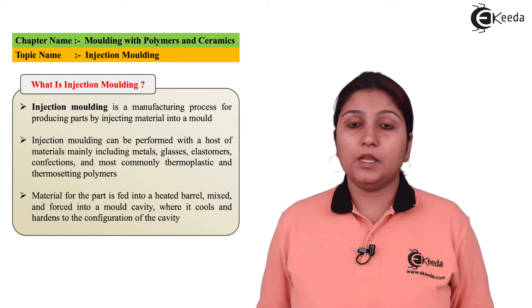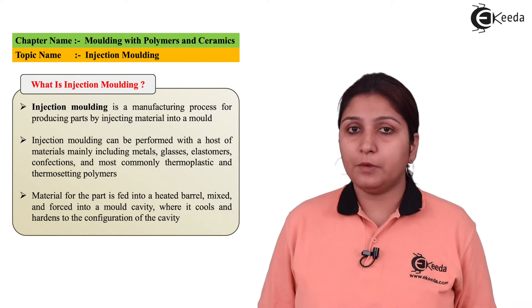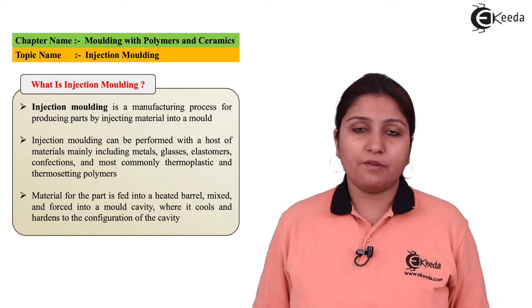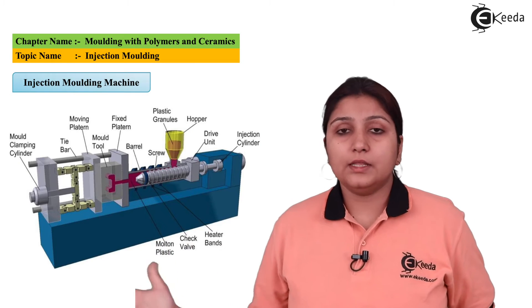Material is fed by a heated barrel which helps in the proper flowability of the material, and from the die cavity the material comes out by getting a proper shape. When you see this diagram, you can see there is an injection type structure with a hopper above.